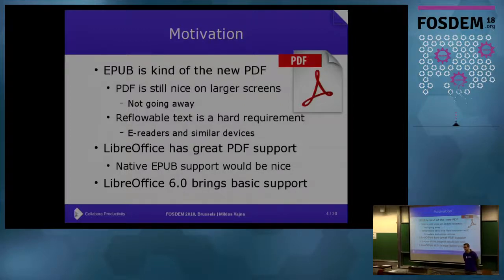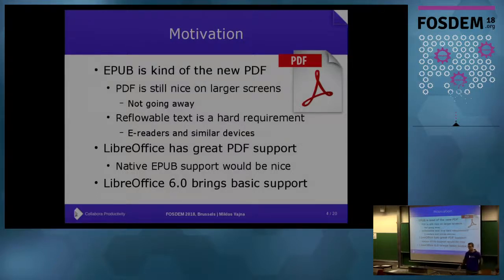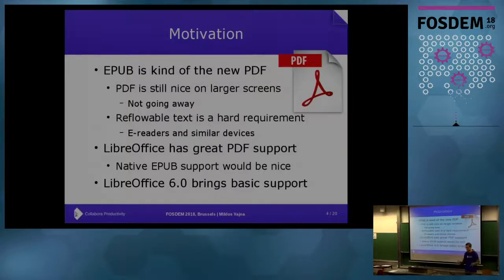As you probably know, LibreOffice has a pretty good PDF export feature, so wouldn't it be nice if it would support exporting to EPUB as well, directly as a native feature? Previously, you could export to some other format and then use a second tool to convert to EPUB. The problem is that all of these are lossy conversions. The more steps you have in your pipeline, the end result may not even be recognizable. So directly exporting from LibreOffice itself has its own benefit.